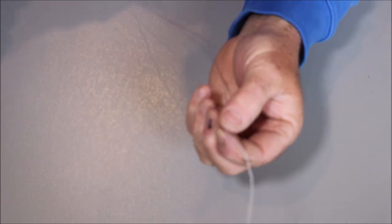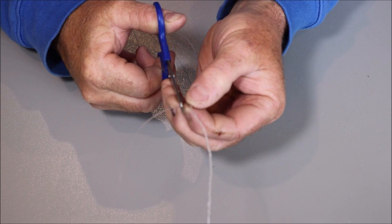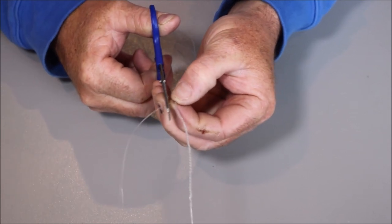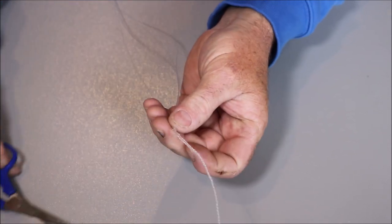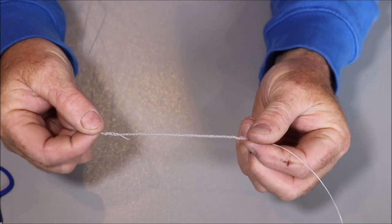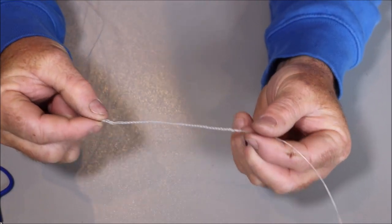And then what you can do is you can just trim off the tag. Not too short. Leave a little bit. And there you have your nice plaited double.